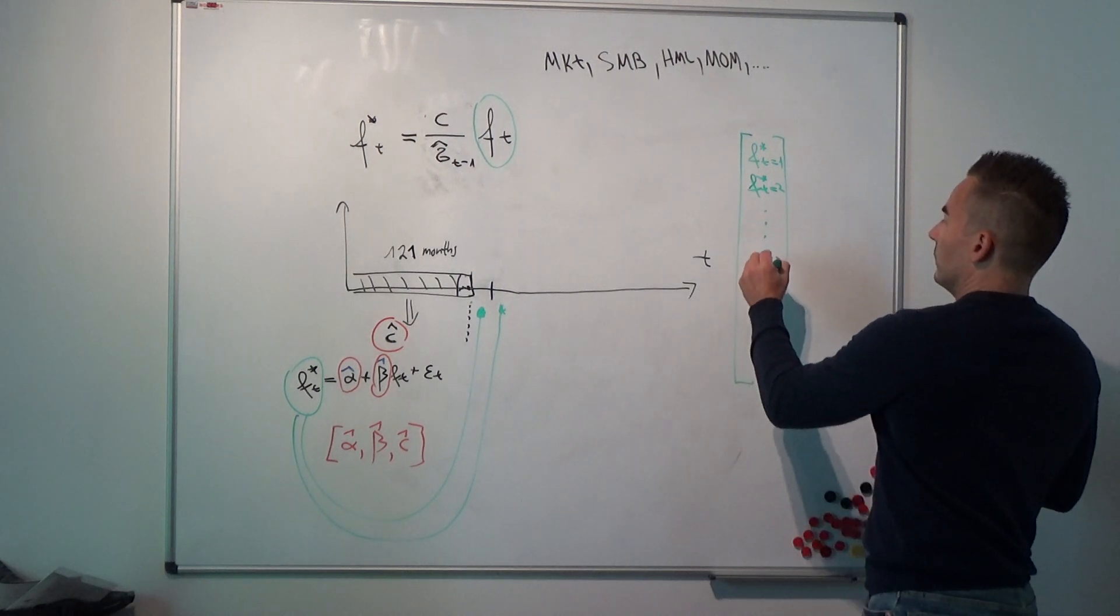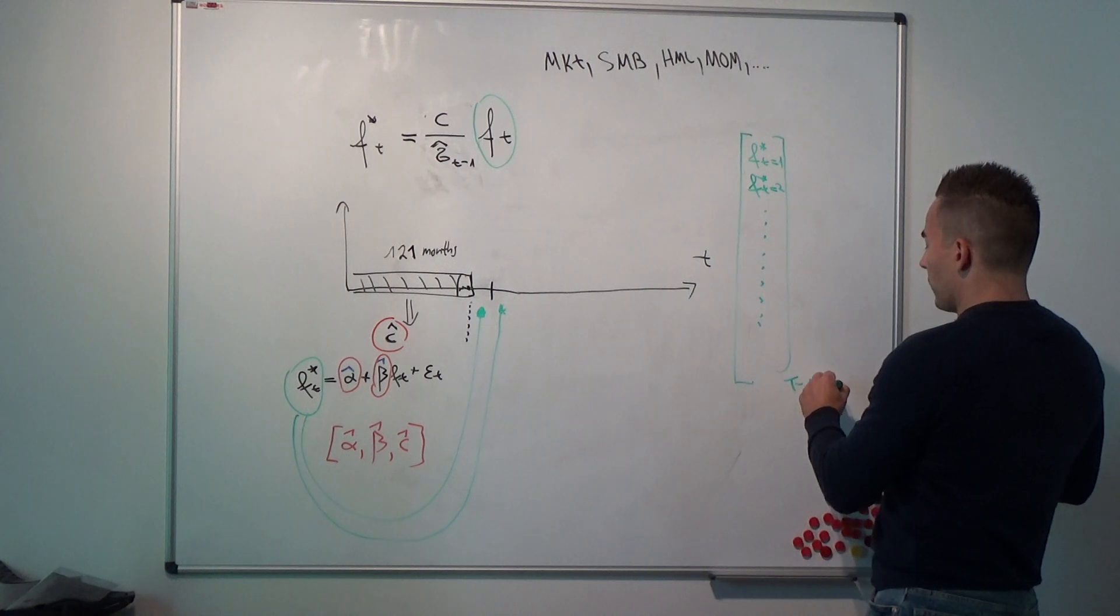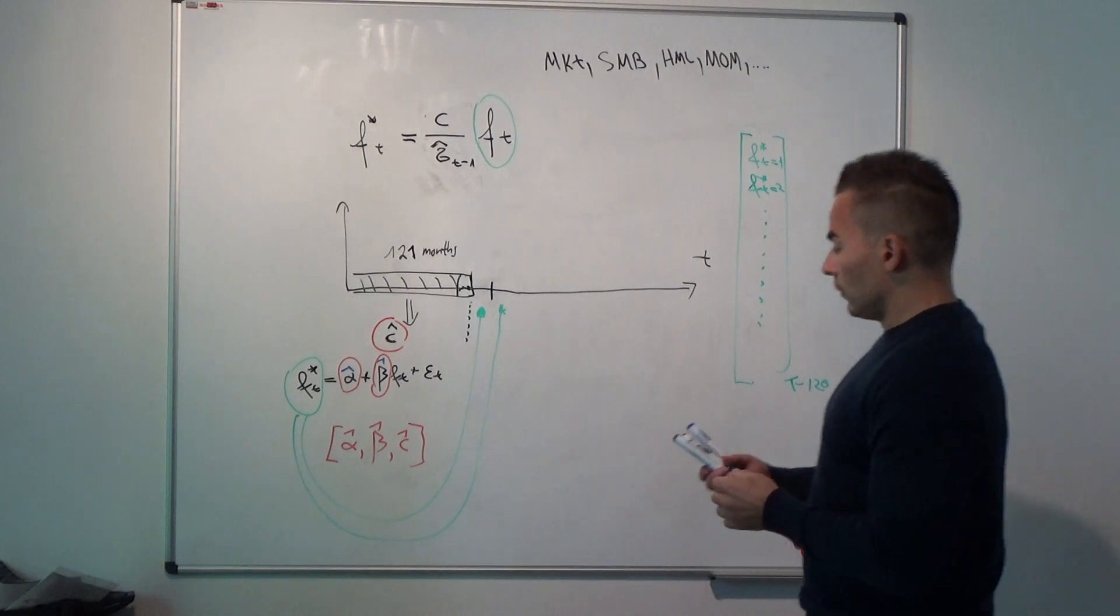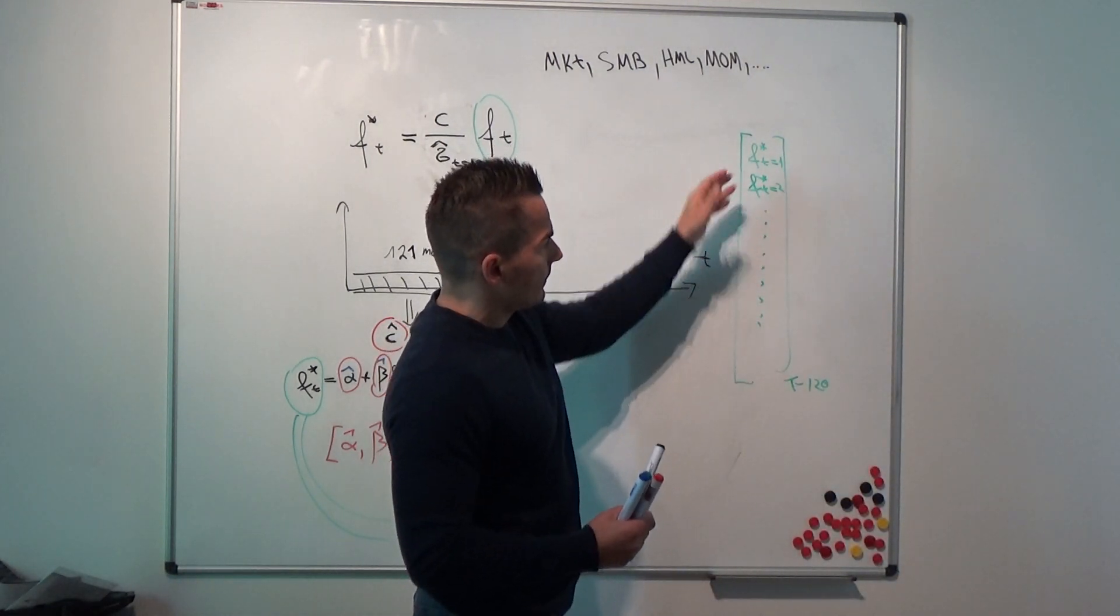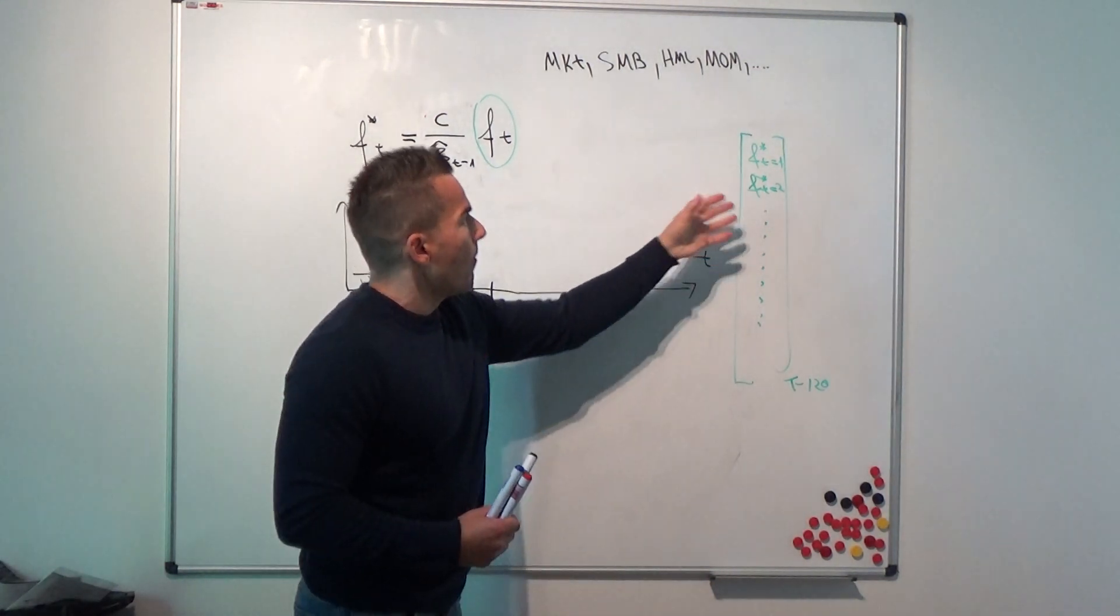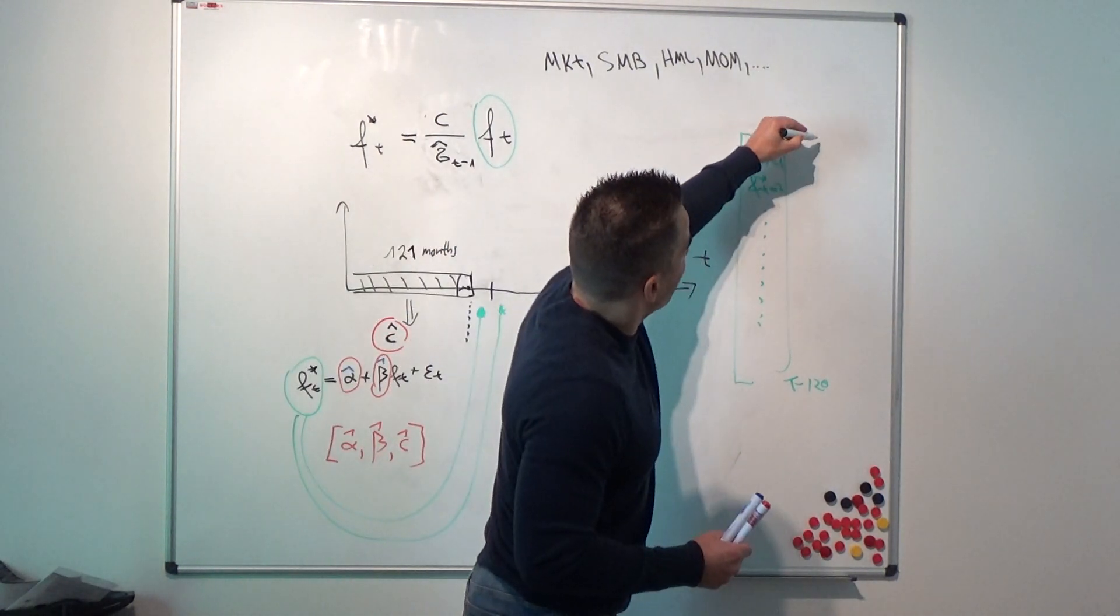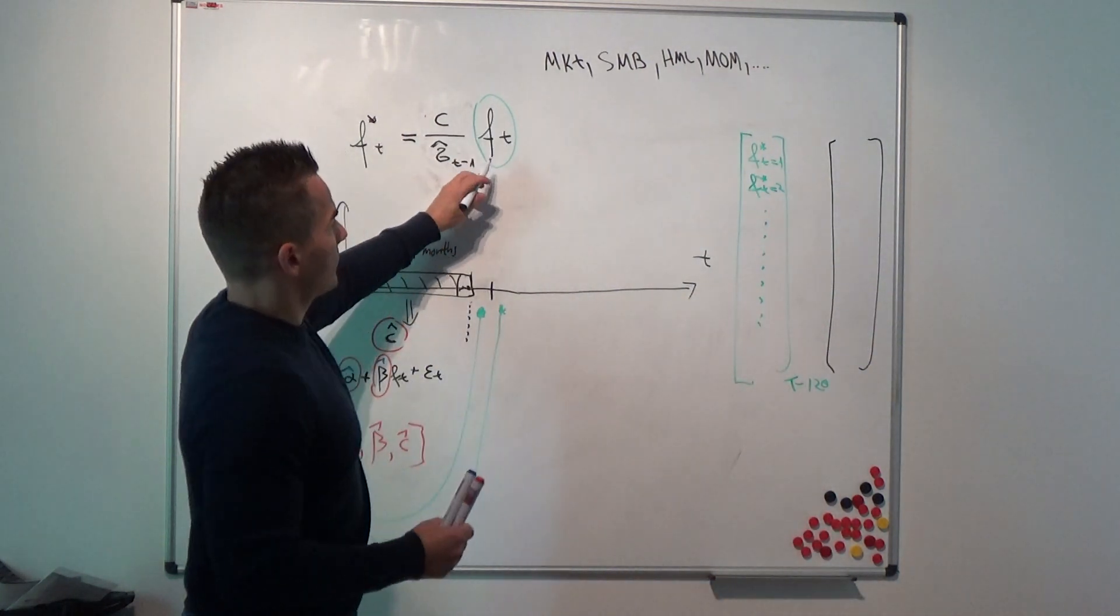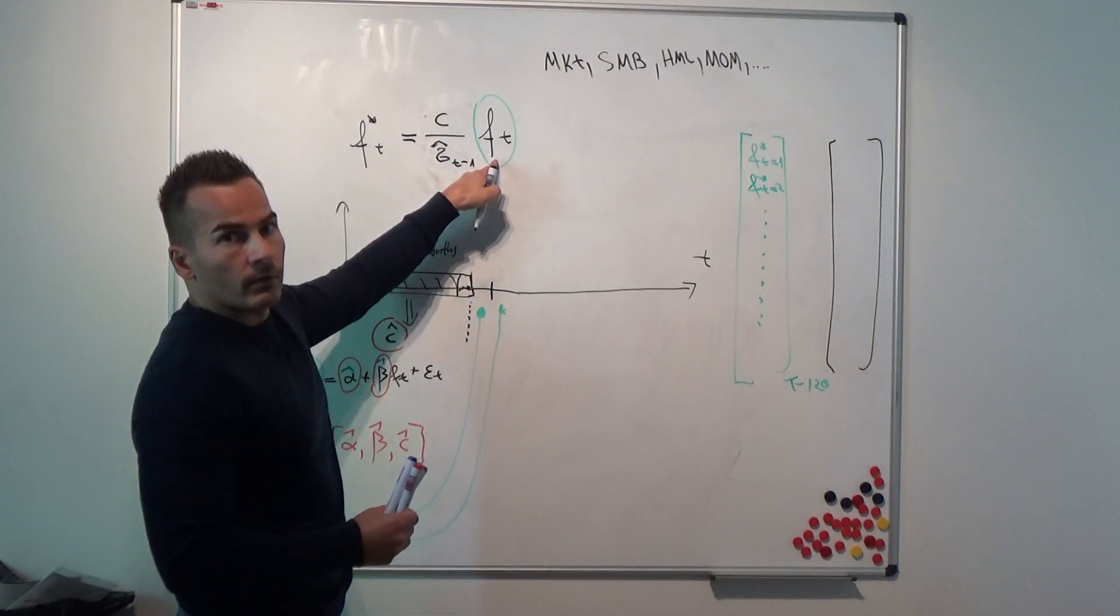We do this until the end of the sample, and the sample is capital T minus 120. What we can do then is we have our estimated out-of-sample volatility-managed risk factor, and we can compare these guys, or we can at the same time store the corresponding estimates for each out-of-sample point in time for the corresponding underlying risk factor here.